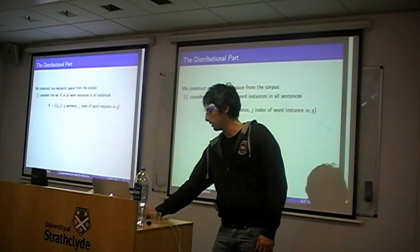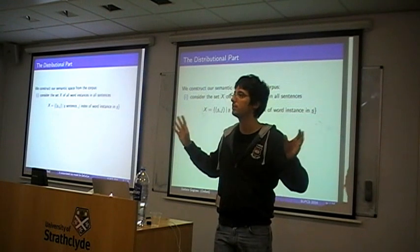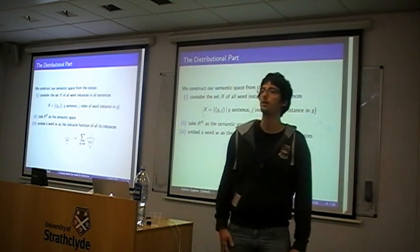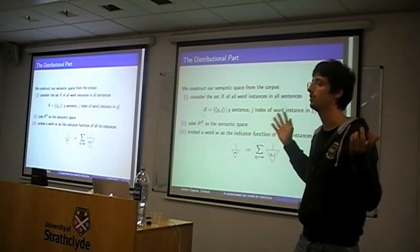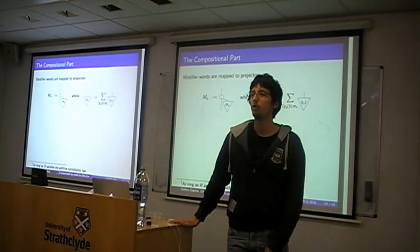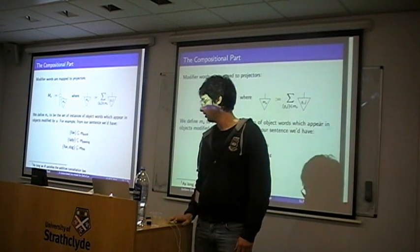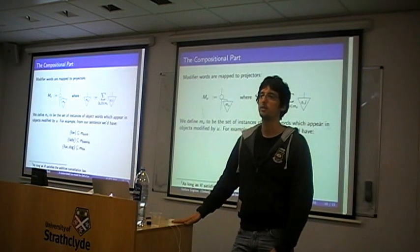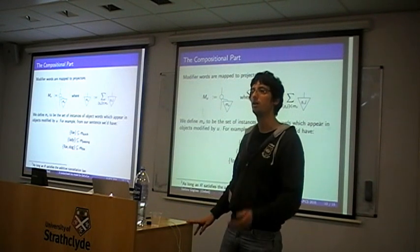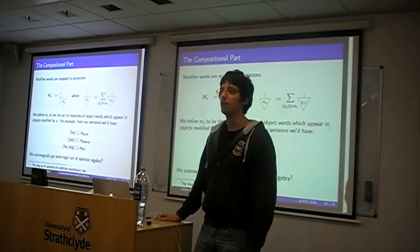You take a basis of the word instances in the sentences of your corpus — this is a very free model, you take all possible instances — then you take indicator functions. You take the space spanned by these instances and interpret a word as its indicator function: put one wherever you find it in the corpus, zero everywhere else. Modifiers are modeled as projectors over all the word instances modified by that specific word. So 'quick' in my original example will project onto that particular instance of 'fox'; 'the' will project onto instances of both 'fox' and 'dog.'